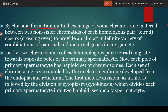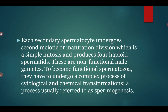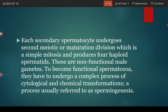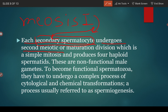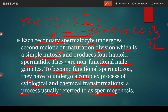After chiasma formation, mutual exchange of chromosome material between two sister chromatids occurs. The two chromosomes of each homologous pair migrate towards the opposite poles of the primary spermatocyte, completing meiosis I, and secondary spermatocytes are formed. The secondary spermatocytes then undergo meiosis II, which is a simple division that produces four haploid spermatids. These are non-functional male gametes; to become functional spermatozoa, they must undergo a complex process of cytological and chemical transformation called spermiogenesis.